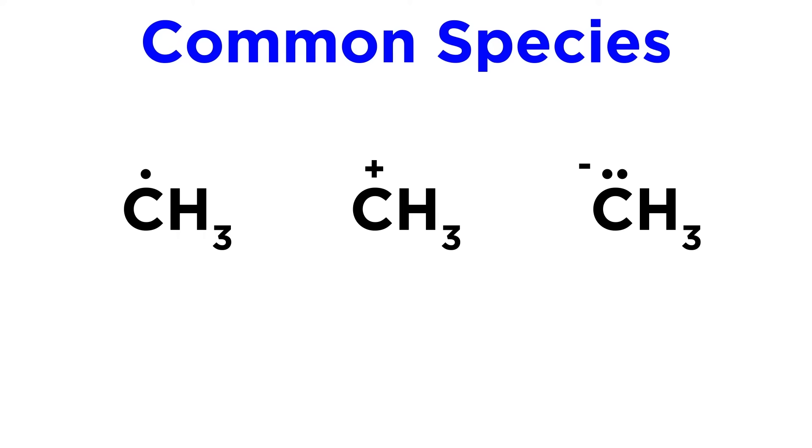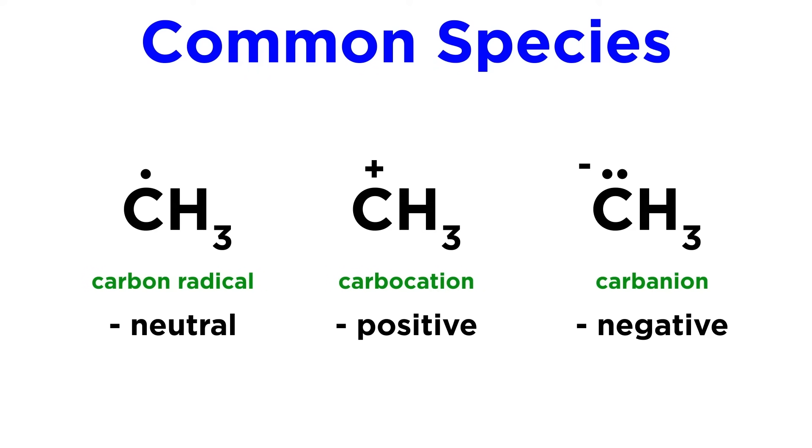Starting with carbon species. Here is a carbon radical with three bonds and one unpaired electron, a carbocation with three bonds and an empty fourth coordination site, and a carbanion with three bonds and one lone pair. These are neutral, positively charged, and negatively charged, respectively.